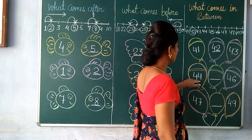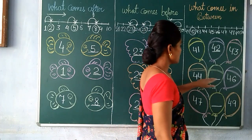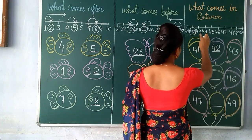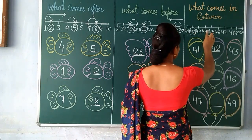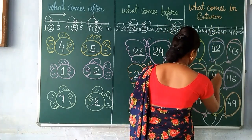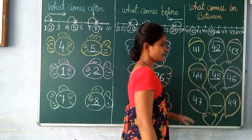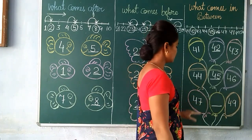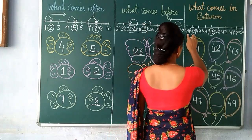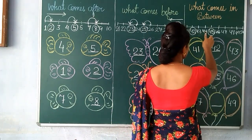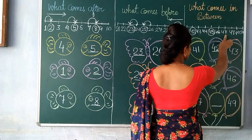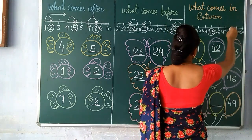Next, what comes in between 44 and 46? We will count the number: 41, 42, 43, 44. What comes in between 44 and 46? It comes 45. We will write here 45. Next, the numbers are 47 and 49. What comes in between 47 and 49? We will count the number: 41, 42, 43, 44, 45, 46, 47. What comes in between 47 and 49? It comes 48.